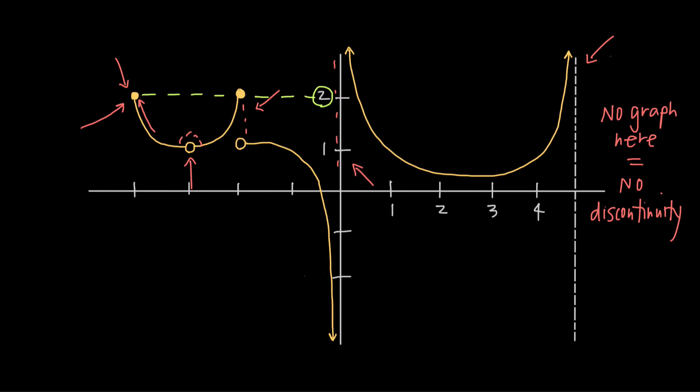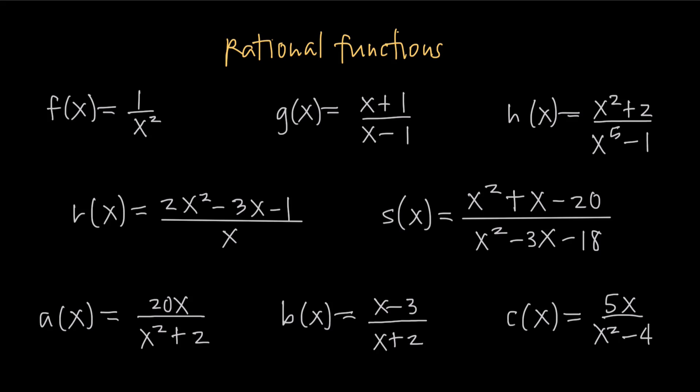So what if you don't have a picture of the graph, but you have the equation of the function itself? Then how do you know where the function has discontinuities? Well, rational functions, which are fractions with polynomials in the numerator and denominator, like all of these, are the most common types of functions to have discontinuities. Because fractions are undefined when the denominator is 0, any value that makes the denominator 0 is going to make a discontinuity in the function.